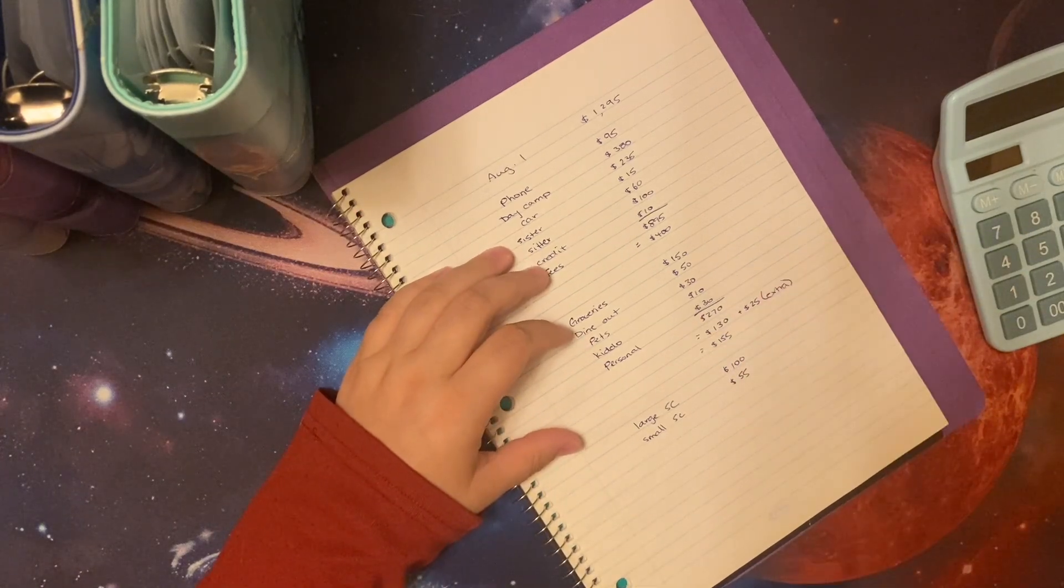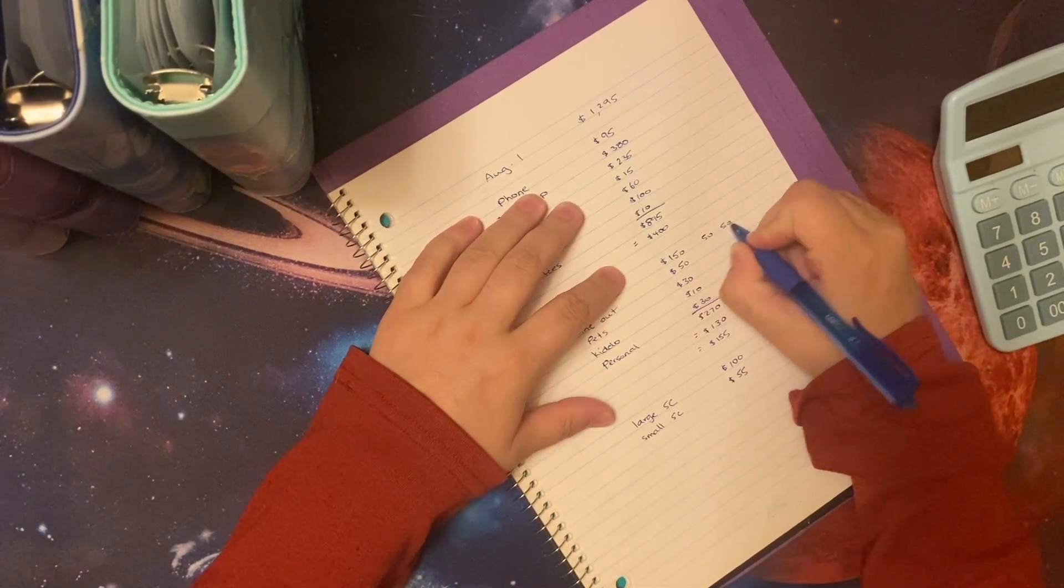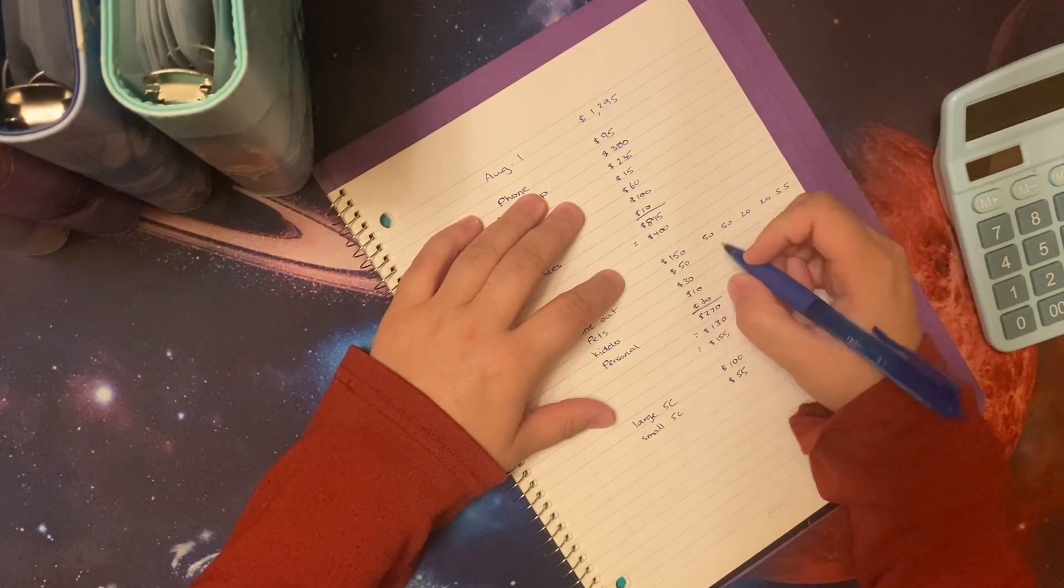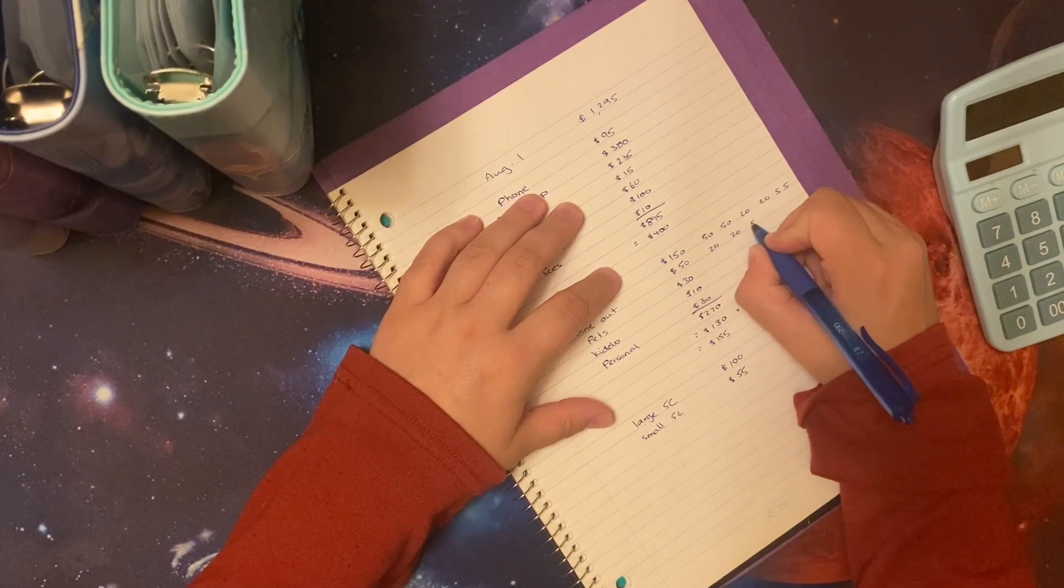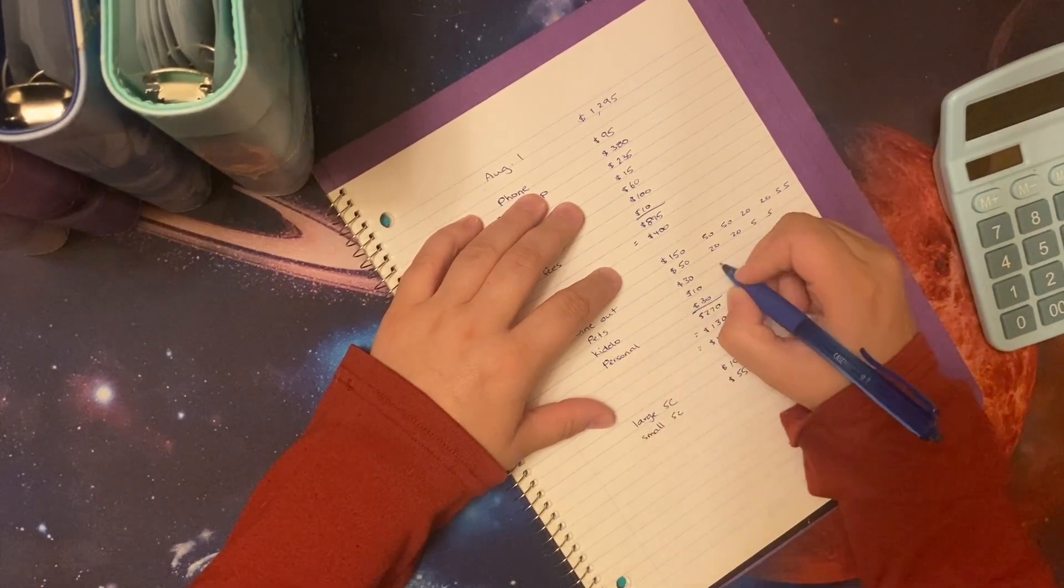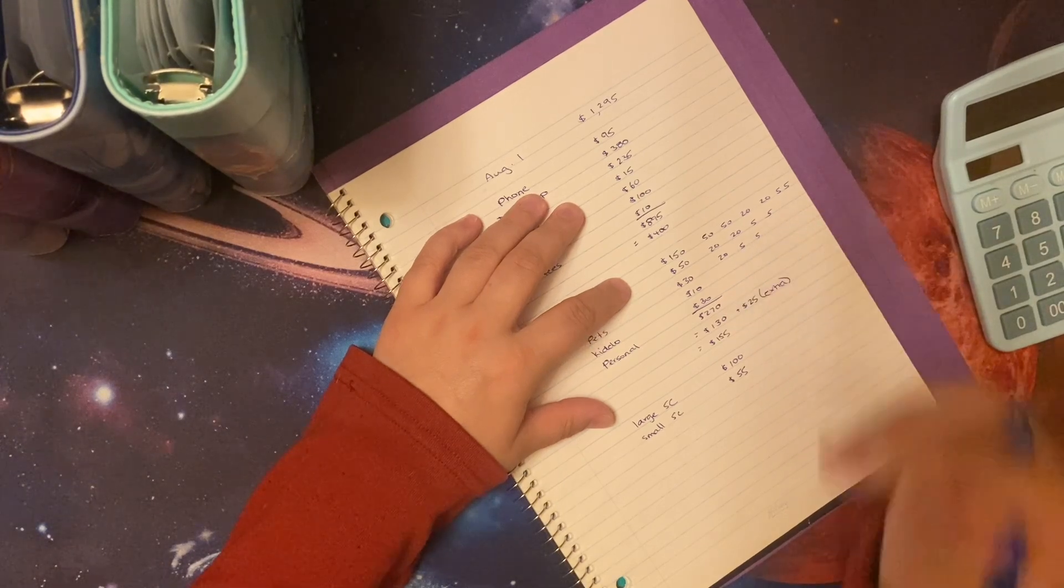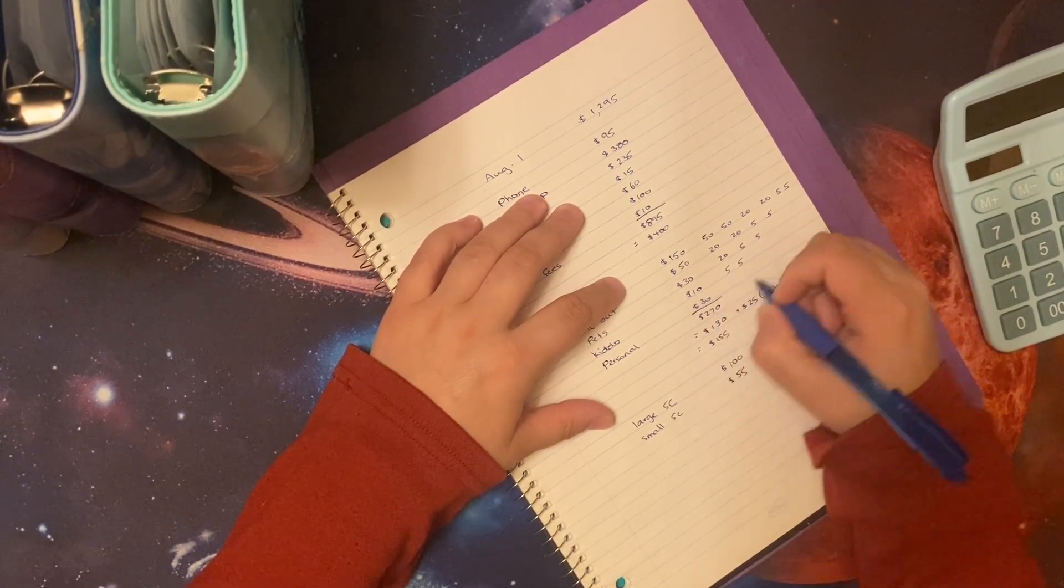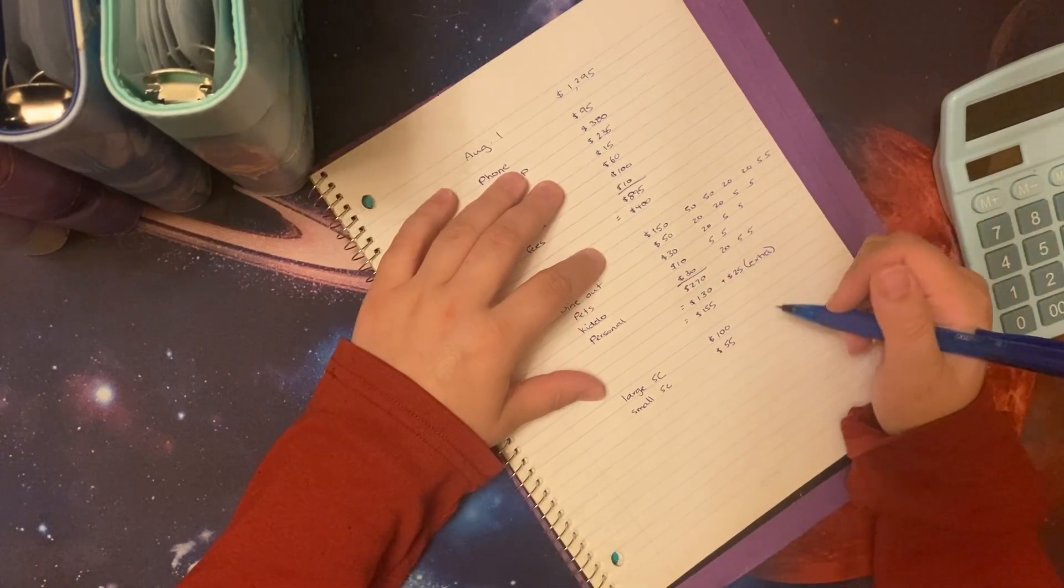All right. So let's get these denominations out of the way. So we've got groceries, we've got 51, 20, 40, 5, and 50. Dining out, we've got 20, 40, 5, and 50. Pets, we have 20, 5, and 30. Kiddo, we've got 5, 10. Personal, we've got 20, 5, 30. Okay.